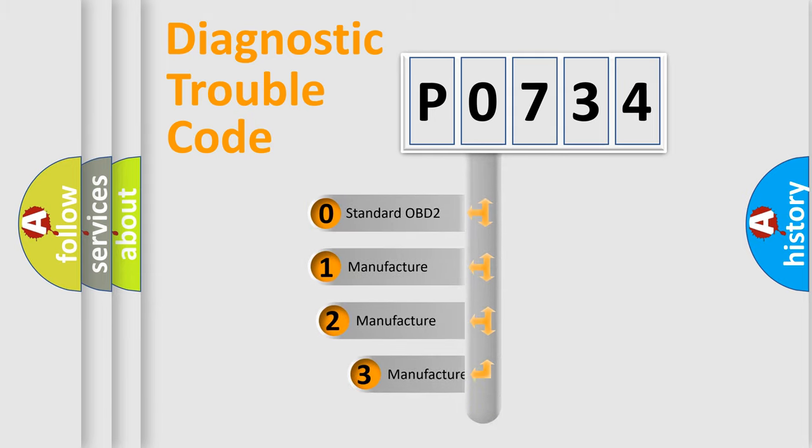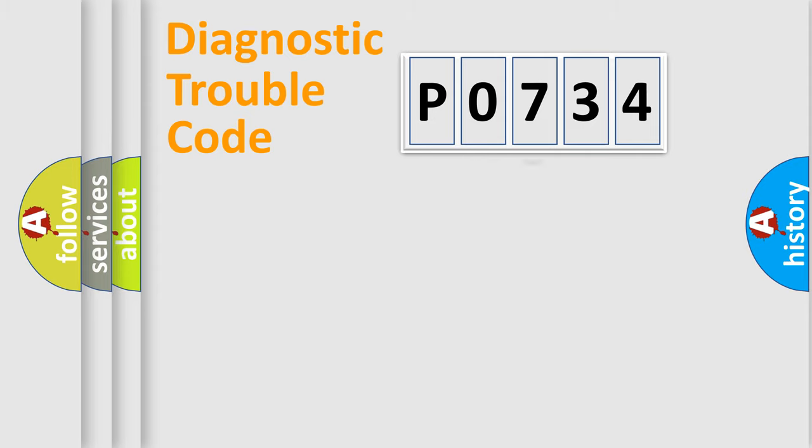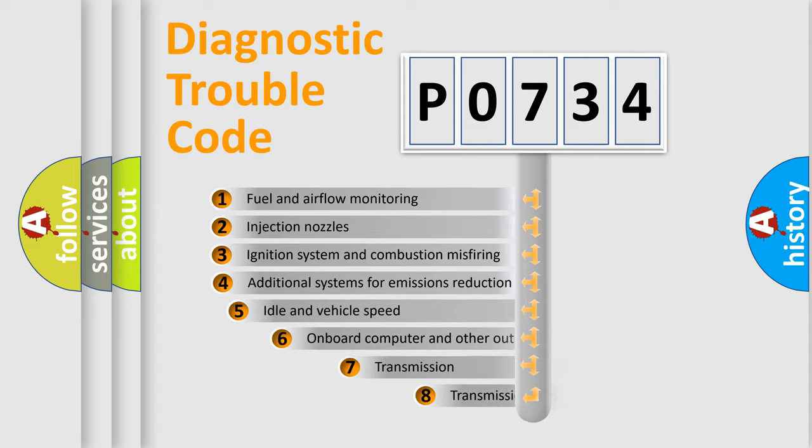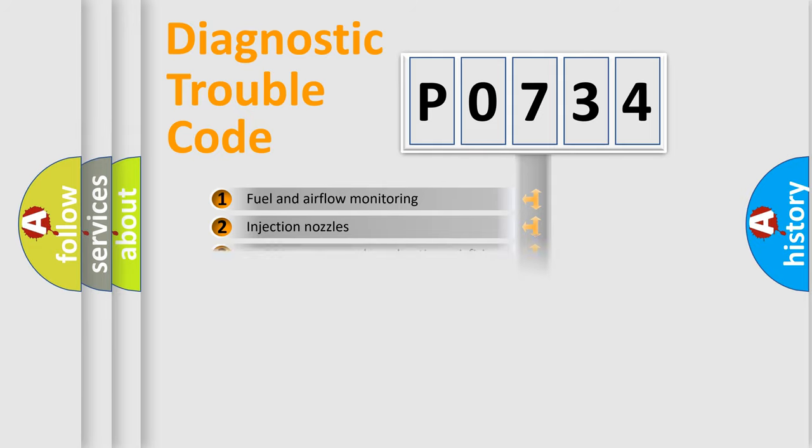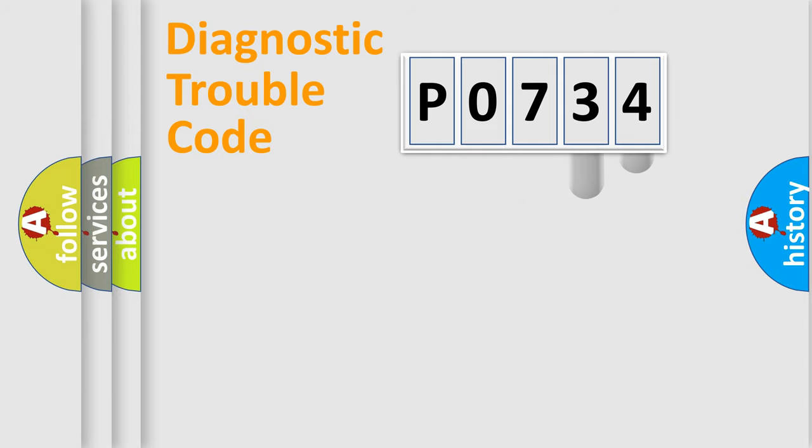If the second character is expressed as zero, it is a standardized error. In the case of numbers 1, 2, 3, it is a more prestigious expression of the car-specific error. The third character specifies a subset of errors.